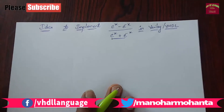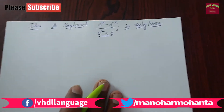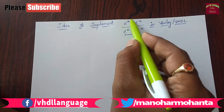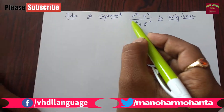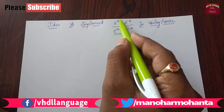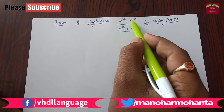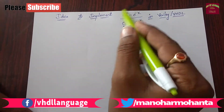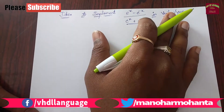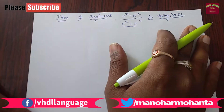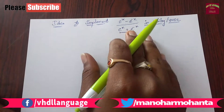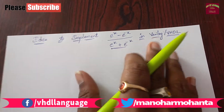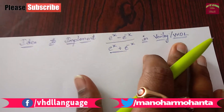Welcome back to my next video. In my previous video you have seen only about e power x. So now we will implement e power x minus e power minus x by e power x, something like this kind of expressions you will be facing. So these expressions can be evaluated through Verilog or VHDL.